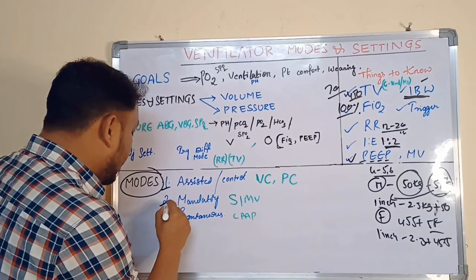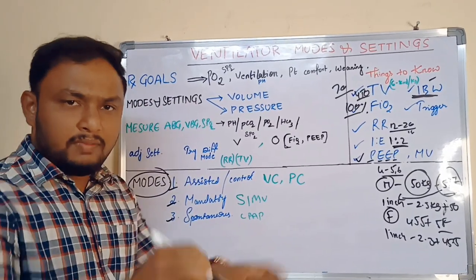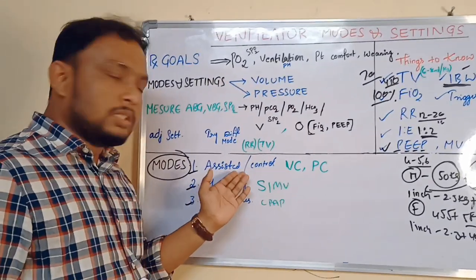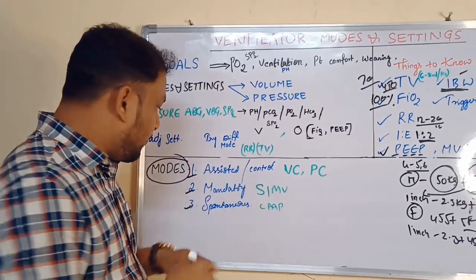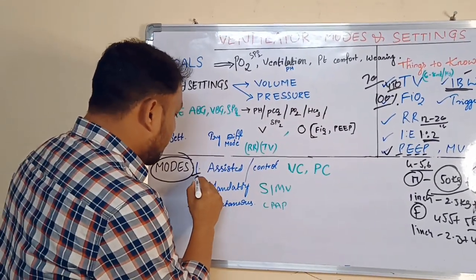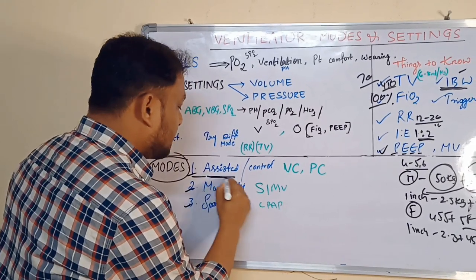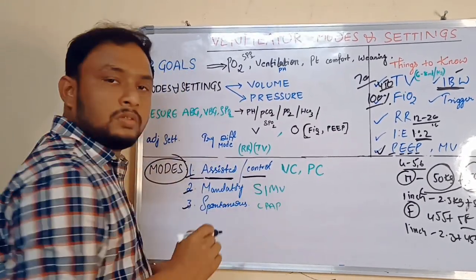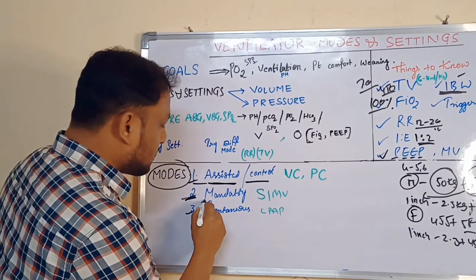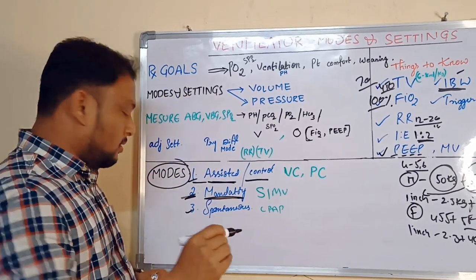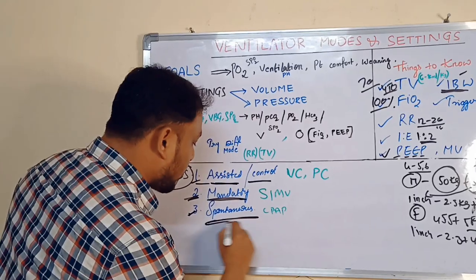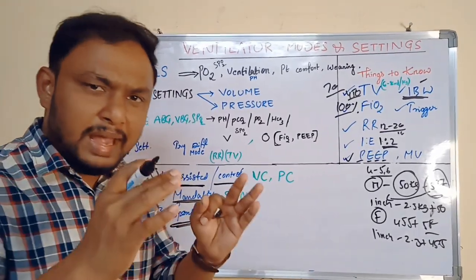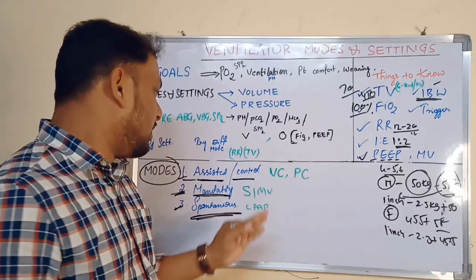There will be three types of modes in any ventilator. Usually the names may be different, but these modes are standard. First one is assist mode — assist or control modes. Second type of mode is mandatory modes. Third type of mode is spontaneous modes. These are the three main types of modes in the ventilator.